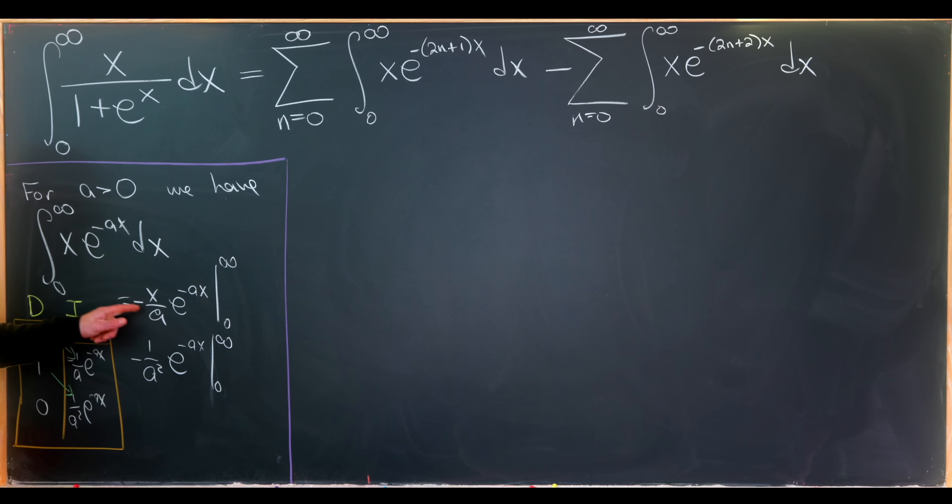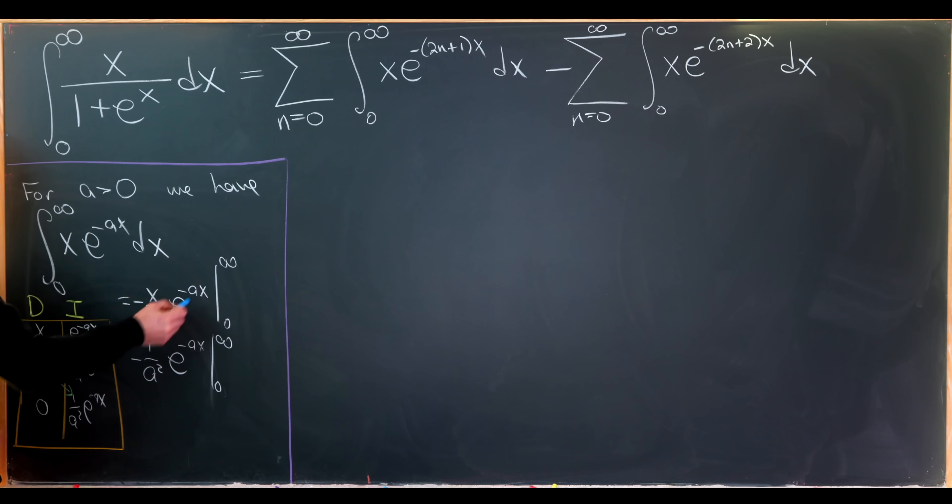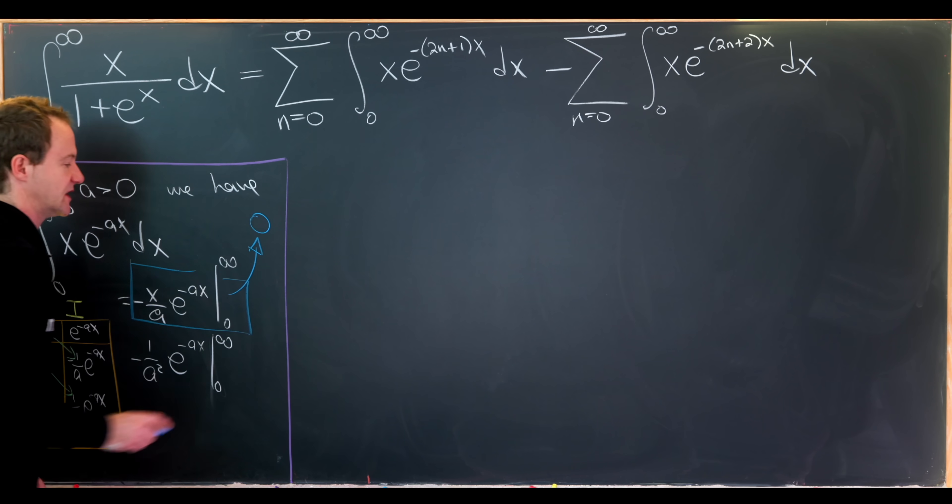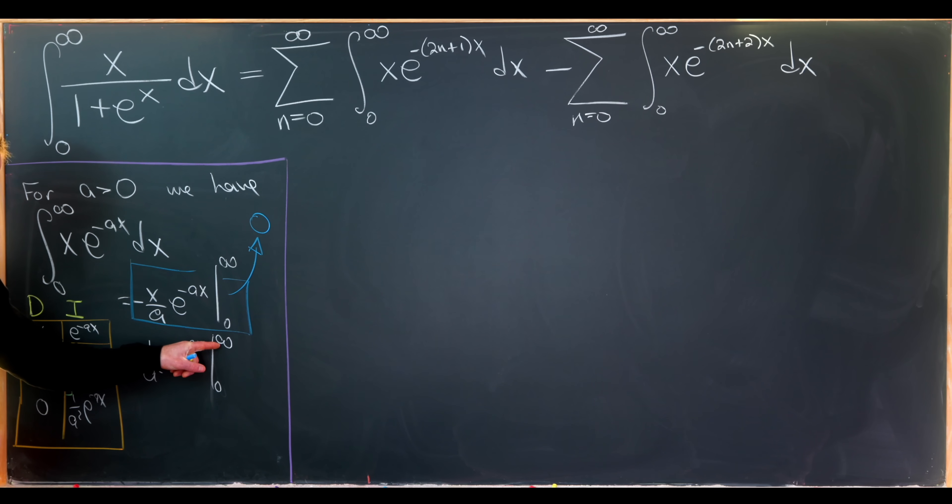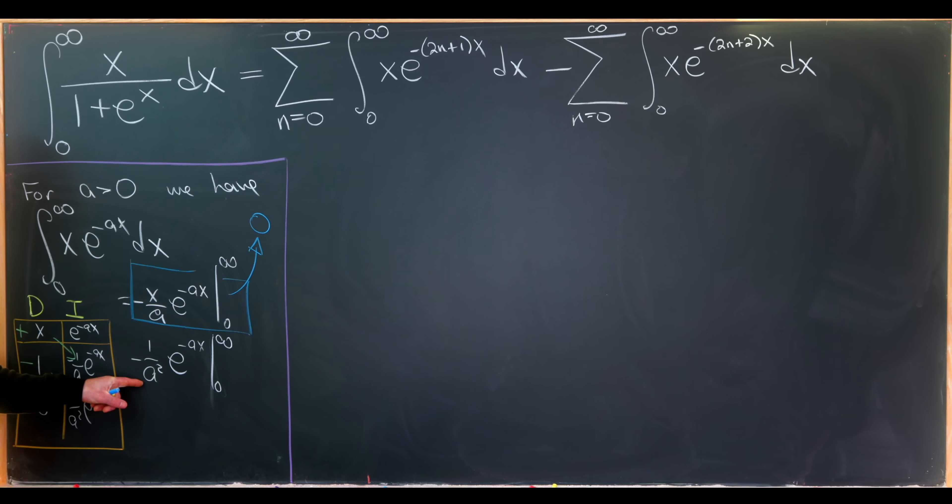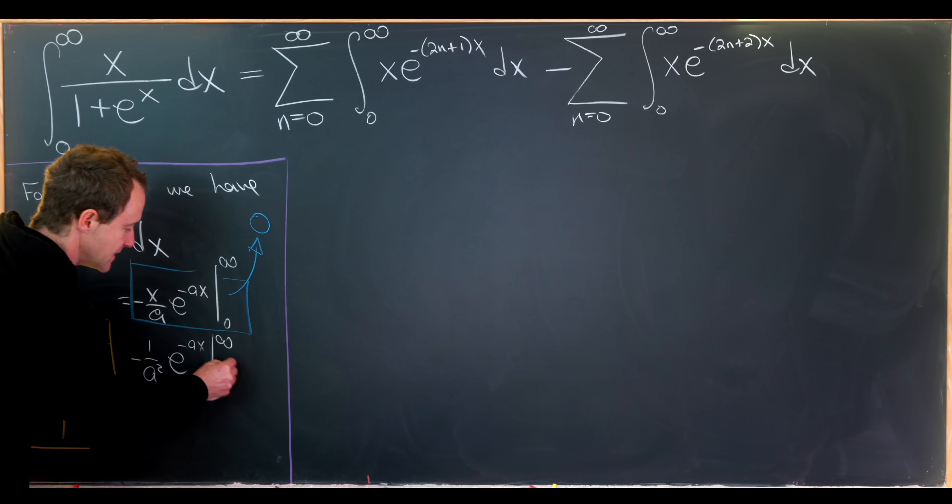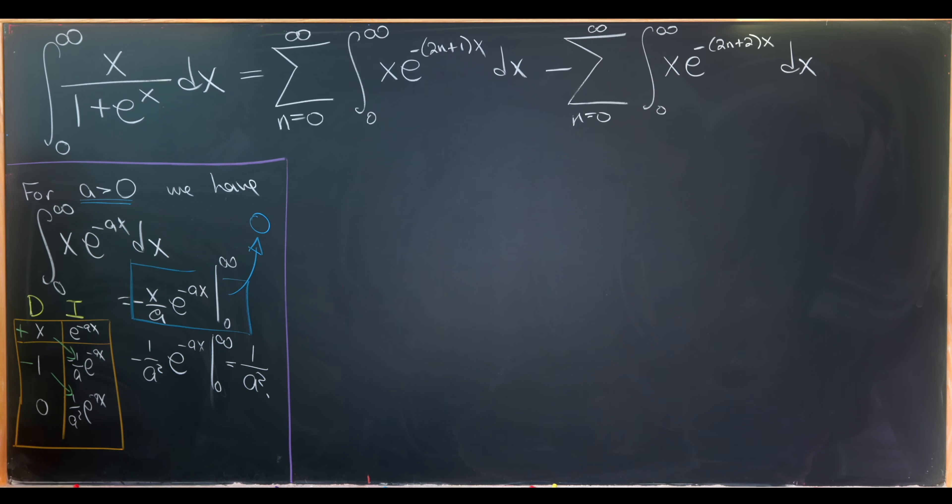This gives us minus x over a e to the minus ax evaluated from 0 to infinity, and then minus 1 over a squared times the exponential e to the minus ax evaluated from 0 to infinity. When evaluating this first term at 0, we get 0. When taking the limit as we approach infinity, we also achieve 0 because this exponential thing will win against this polynomial object. Then for the other term, taking the limit as x approaches infinity will have this thing trend towards 0. So all we're left with is when x is equal to 0. But e to the 0 is 1. And then we're in the lower bound of the evaluation, which means it's attached to the opposite sign. So that becomes 1 over a squared.